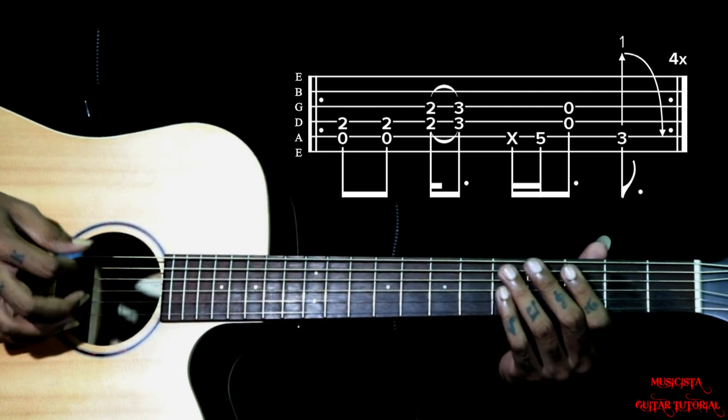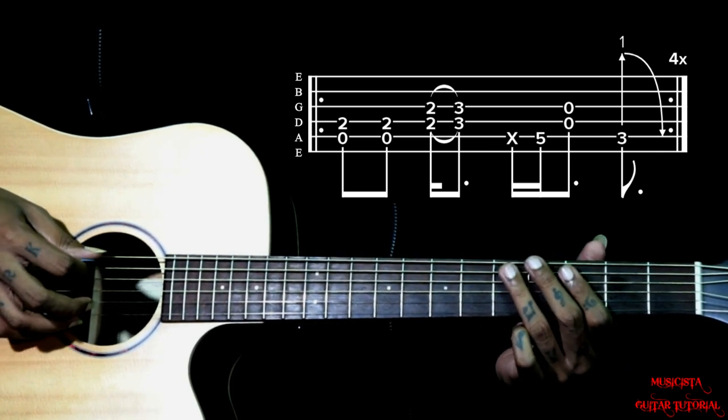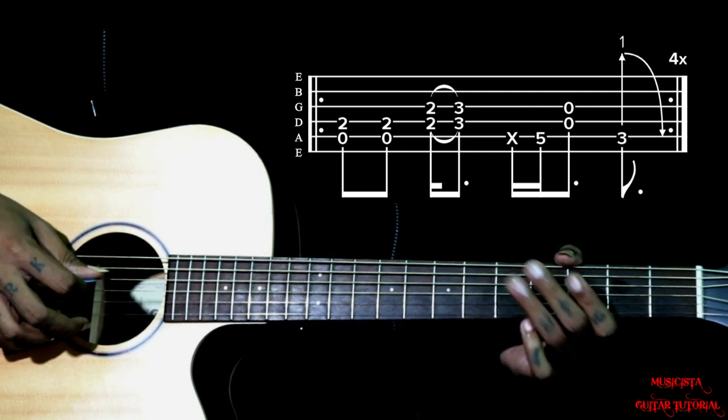Then we have a ghost note where we just pluck the 5th string by touching with our fingers here. Then we play 5th fret on the 5th string. Then we got to ring 4th and 3rd string open.